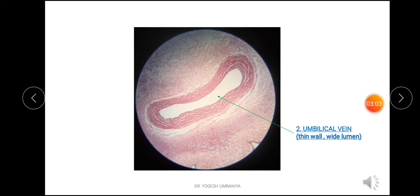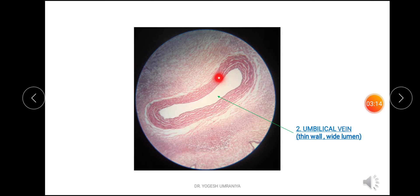This is the closer view of the umbilical vein. You can see the lumen is not circular as compared to the umbilical arteries — the lumen is somewhat collapsed. The wall of the umbilical vein is thin, and the lumen is quite larger, wider, and more spacious as compared to the umbilical arteries.